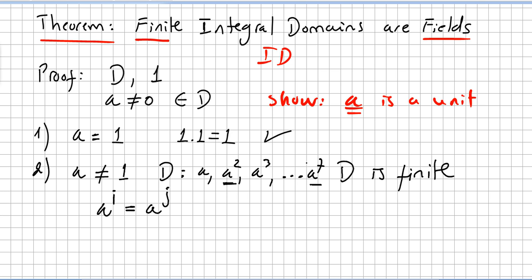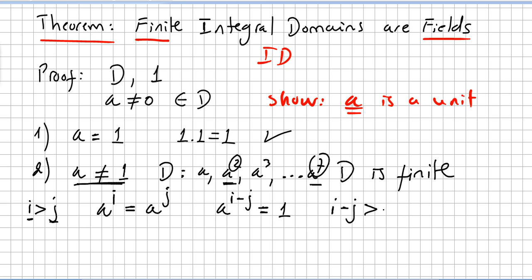Here we use cancellation — since this is an integral domain you can use cancellation — and we get a to the power of i minus j equals 1. Since a is not the identity, i minus j cannot be 1, so i minus j will be strictly greater than 1.